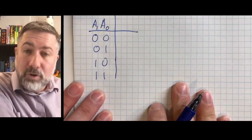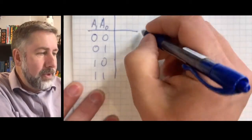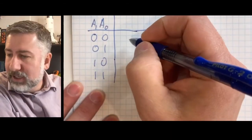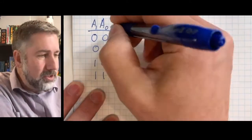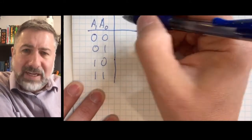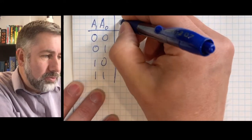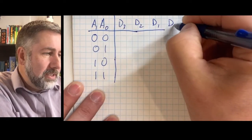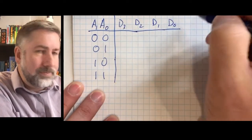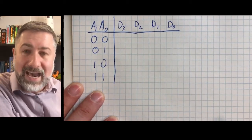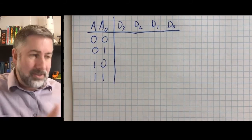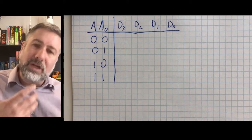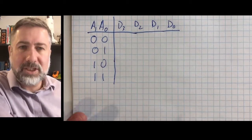Now if there are four devices we can choose — maybe four registers, four memory elements — we're going to name those with D: D3, D2, D1, and D0. Those are the four devices that are going to be active. So this device that we're building — this decoder — is going to have four outputs, one for each possible device that we want to select.